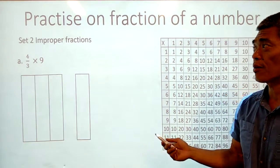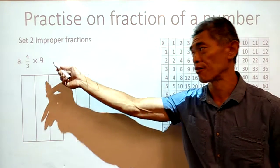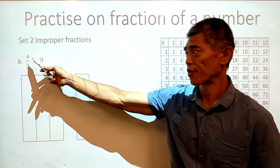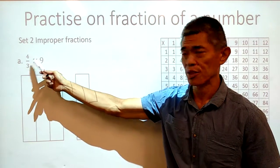Now, what does it mean when you have an improper fraction of a quantity? In this example, you have 4 thirds of 9.